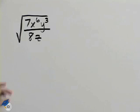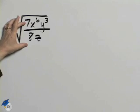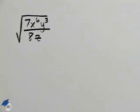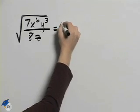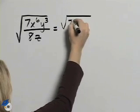To simplify this expression, we'll first look at the fraction and see if there's anything that we can simplify. There are no like terms on the top and the bottom, so the next step will be to use the quotient rule and rewrite this as two separate radicals.